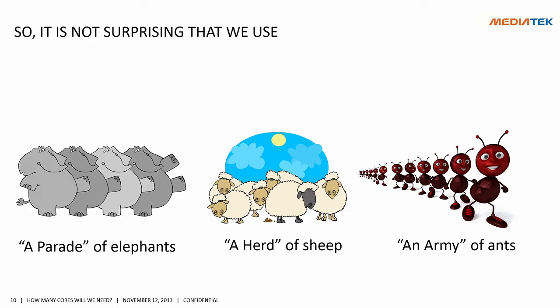So it's not surprising that we use a parade of elephants, a herd of sheep, and an army of ants. But I'm not going to talk about animal kingdoms, because the list can go on and on. I'm going to talk about processors, of course, which actually is fascinating.